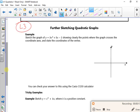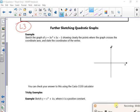This could be the Monday when we come back to college after the weekend. So it says, sketch the graph of 3x² + 5x - 2, showing clearly the points where the graph crosses the coordinate axes and state the coordinates of the vertex.